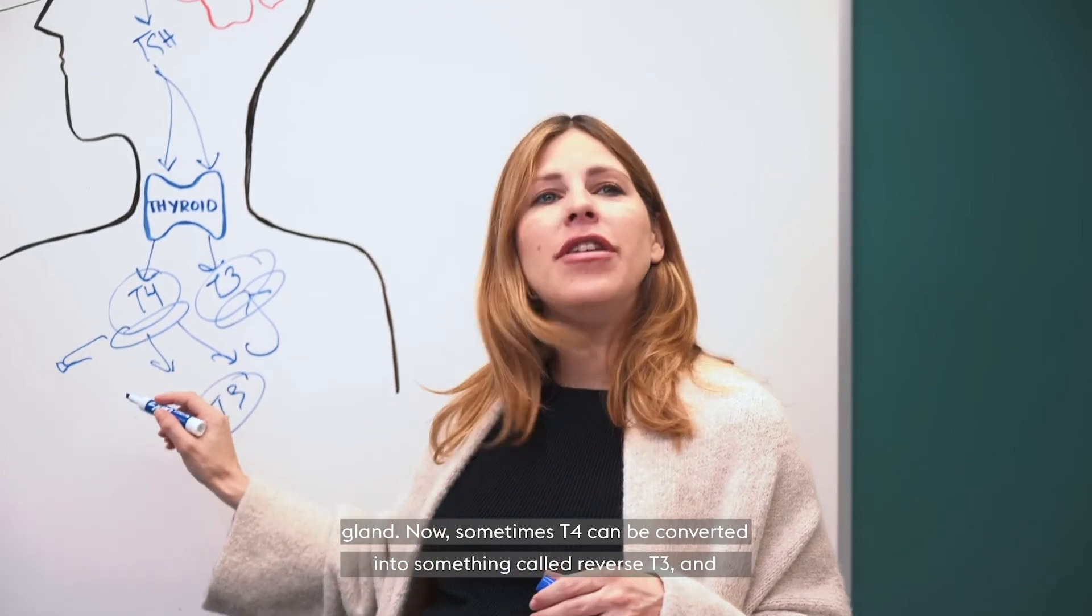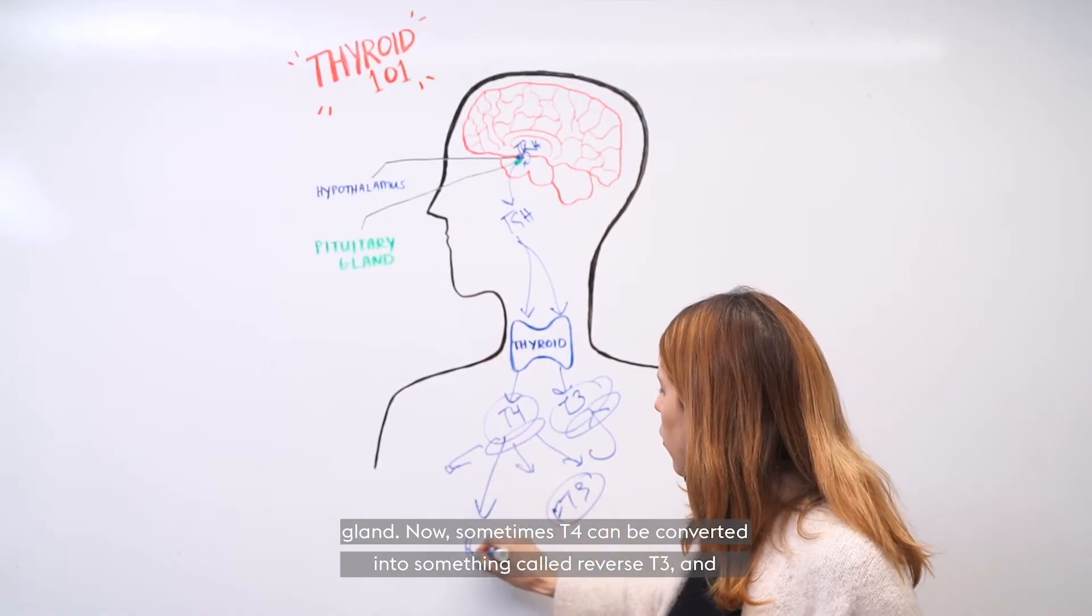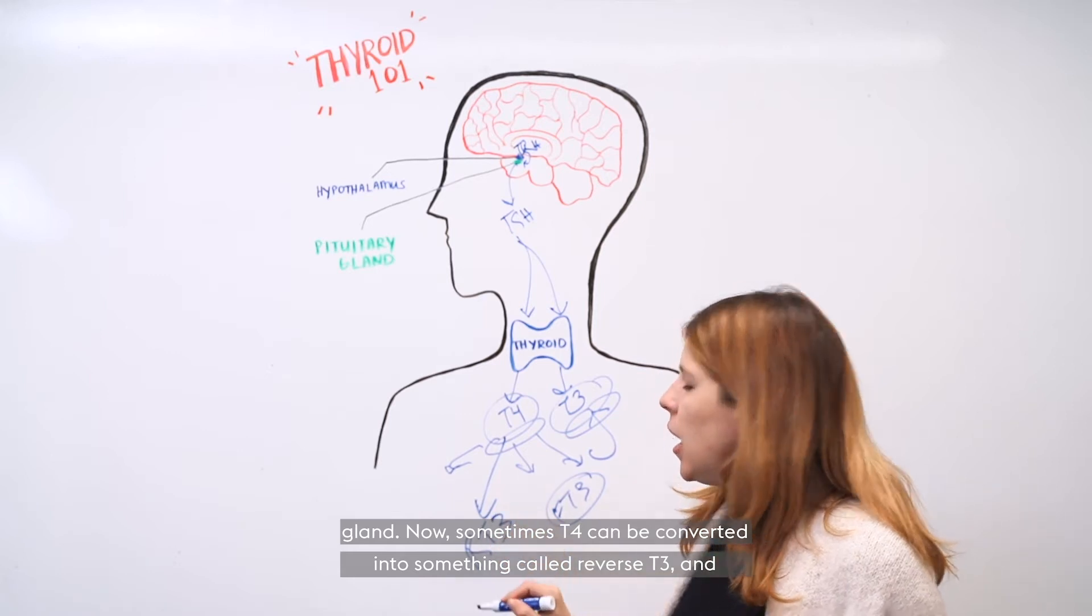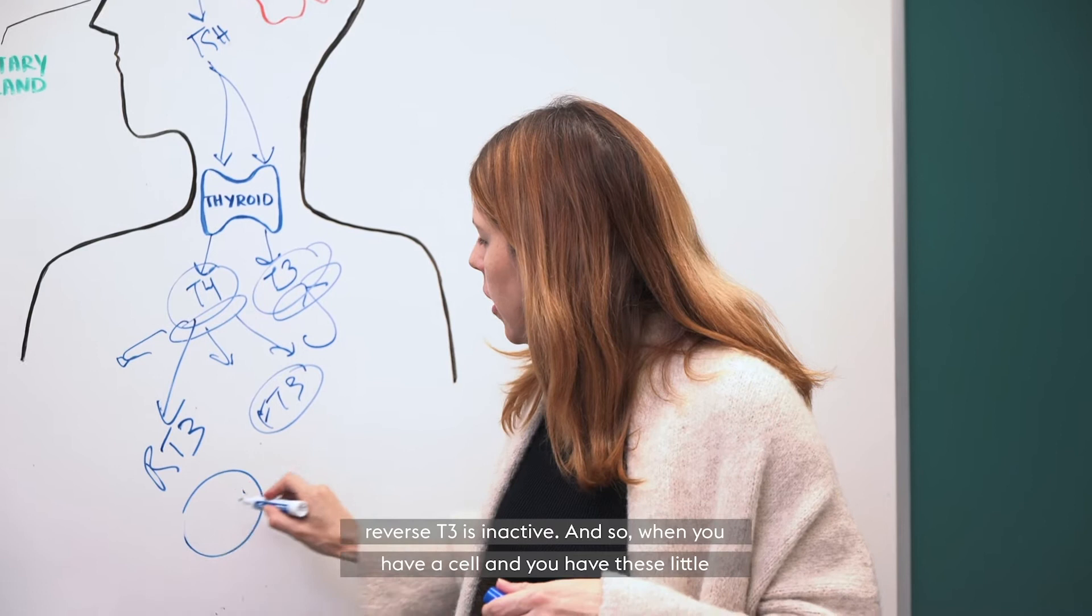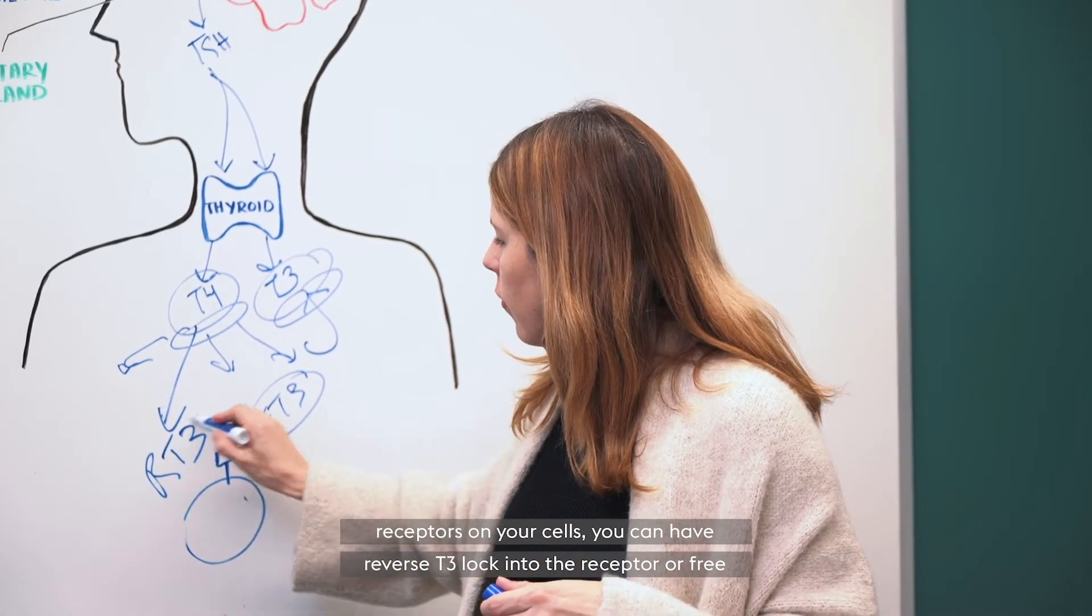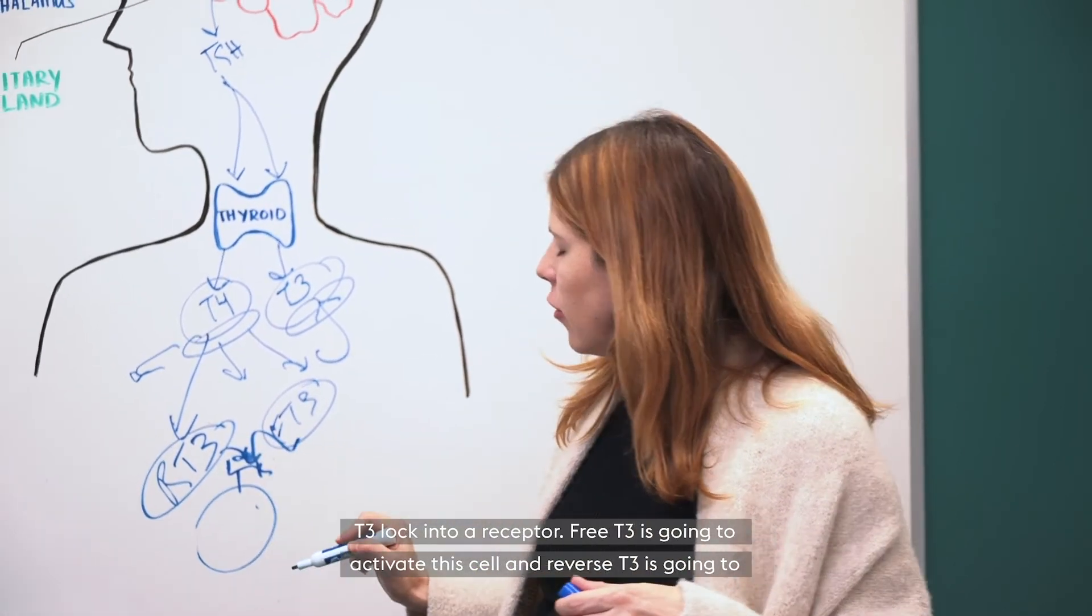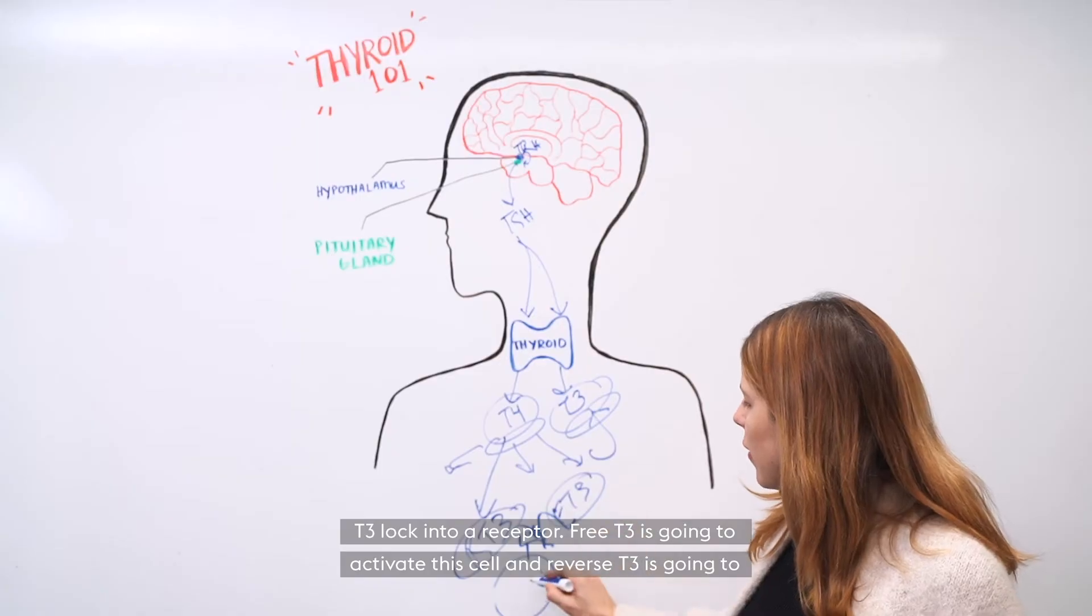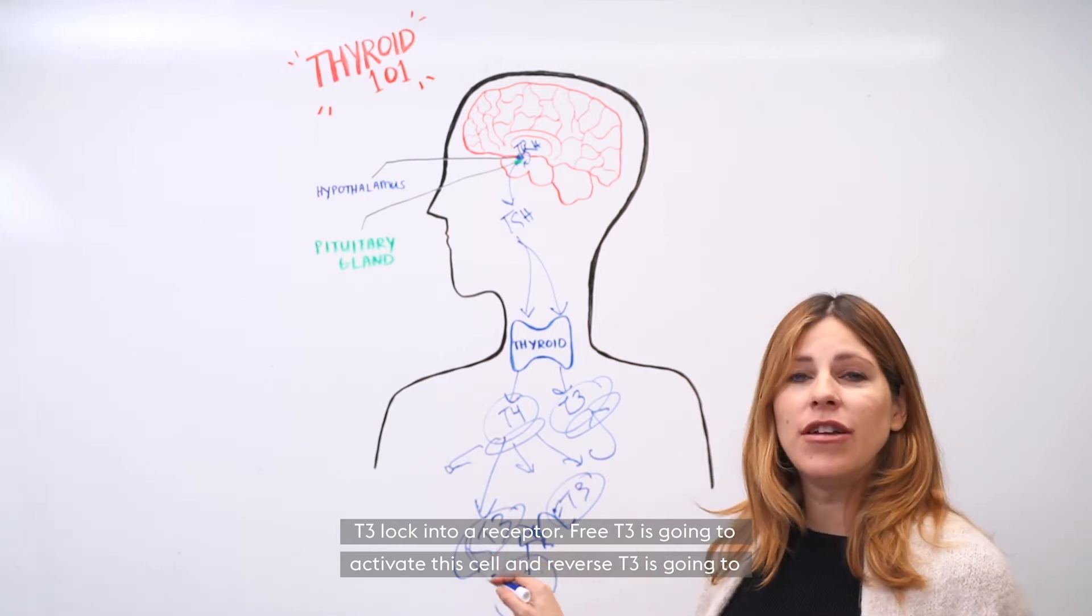Now, sometimes T4 can be converted into something called reverse T3. And reverse T3 is inactive. And so when you have a cell and you have these little receptors on your cells, you can have reverse T3 lock into the receptor or free T3 lock into a receptor. Free T3 is going to activate this cell and reverse T3 is going to do nothing.